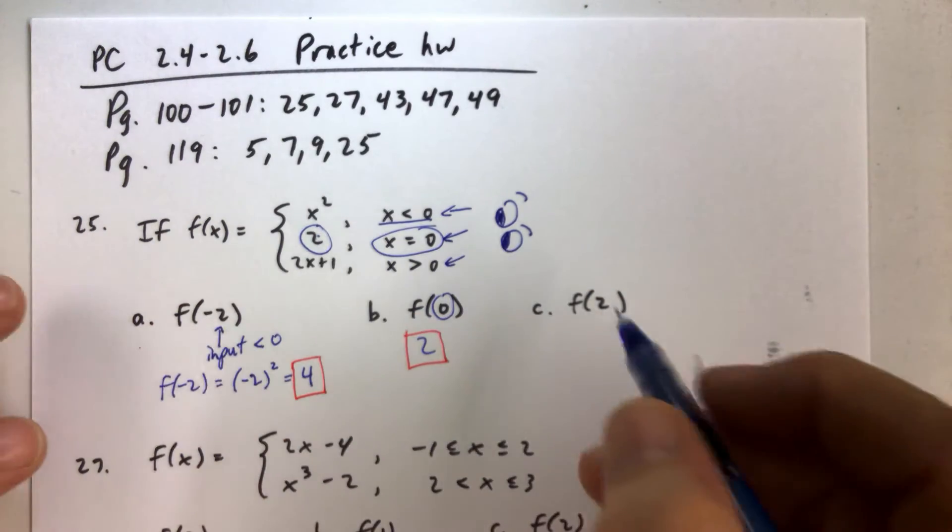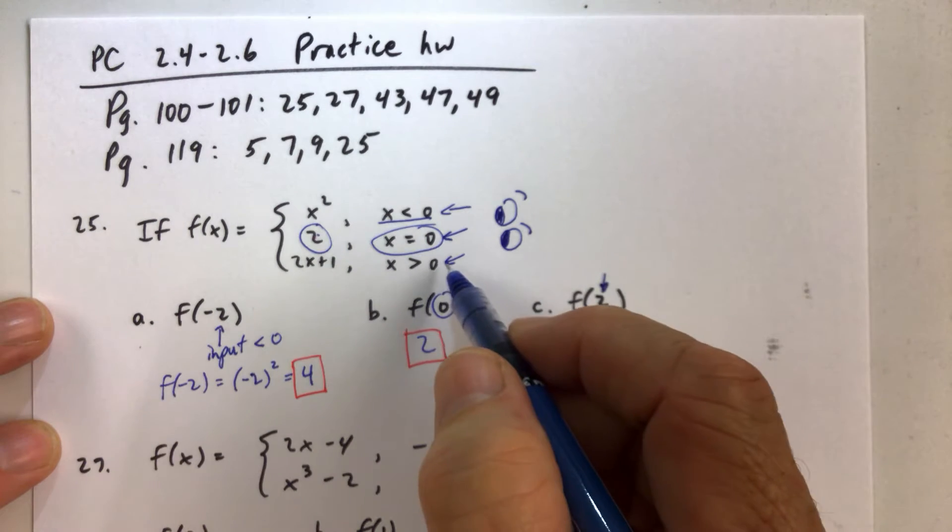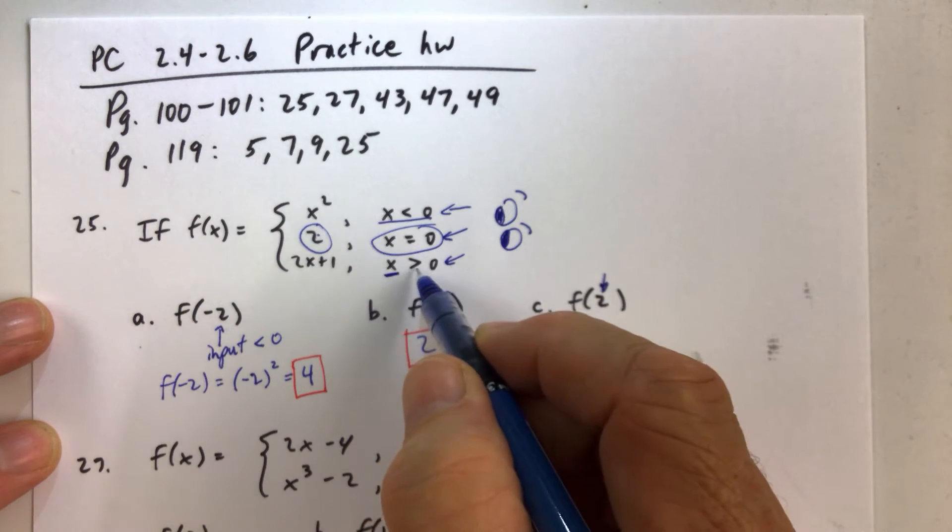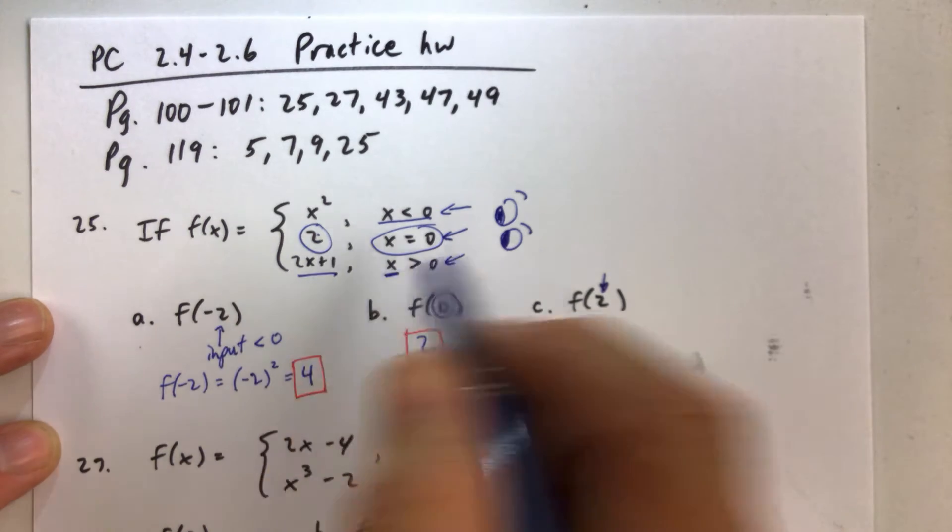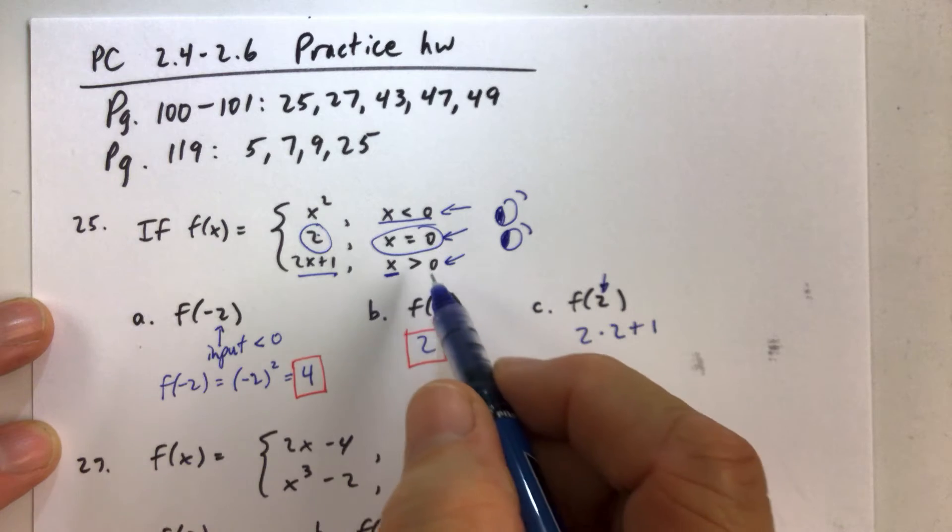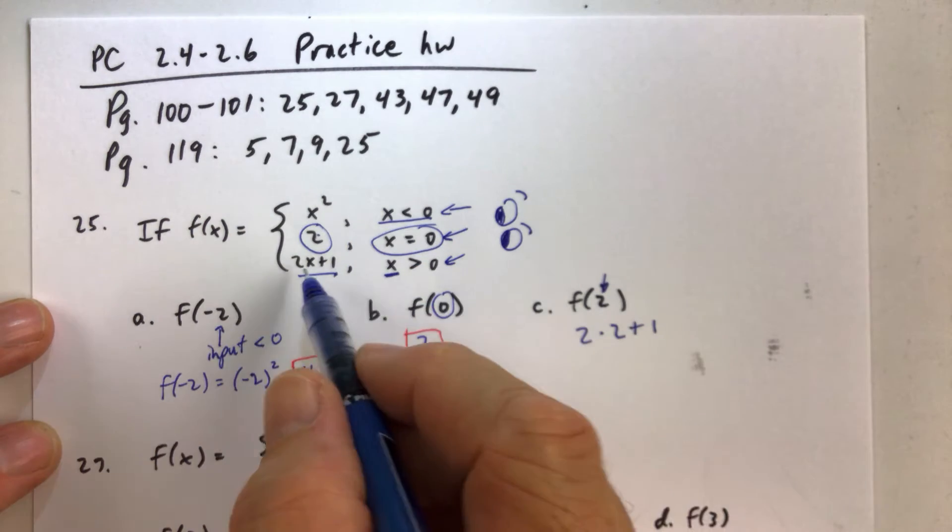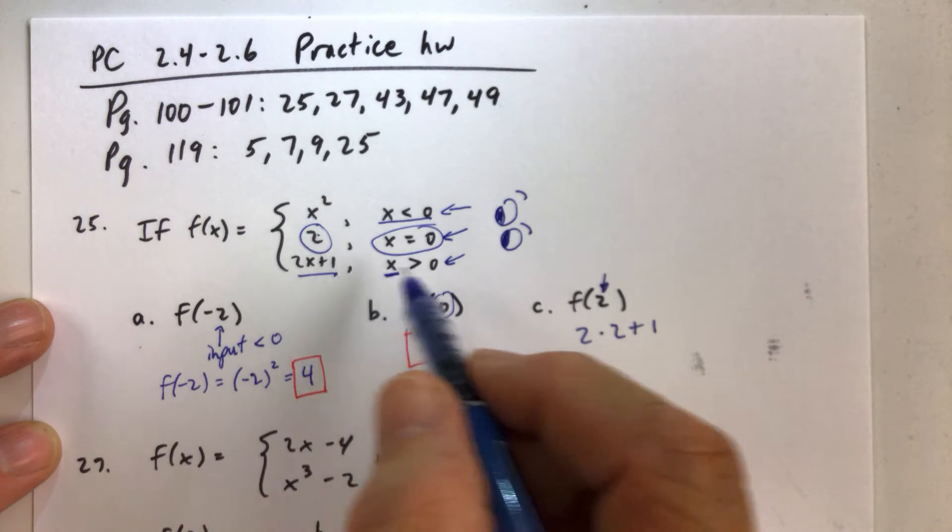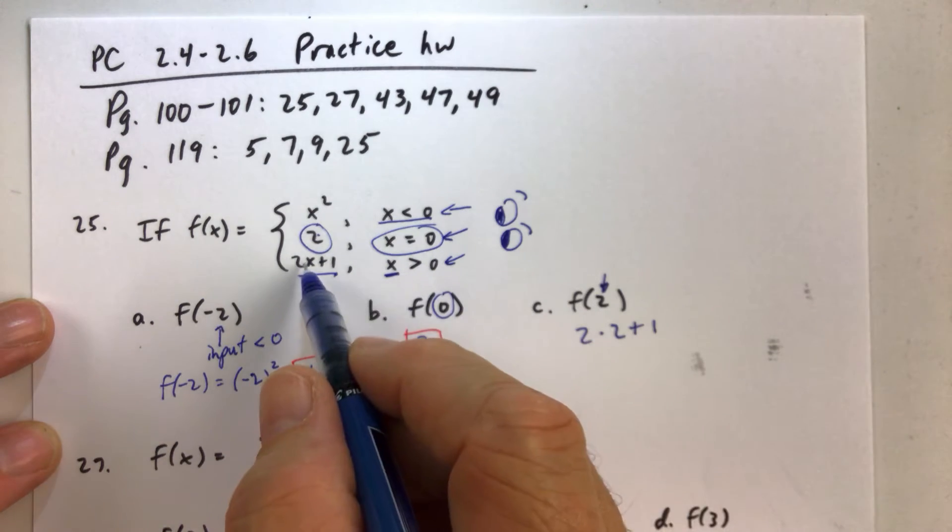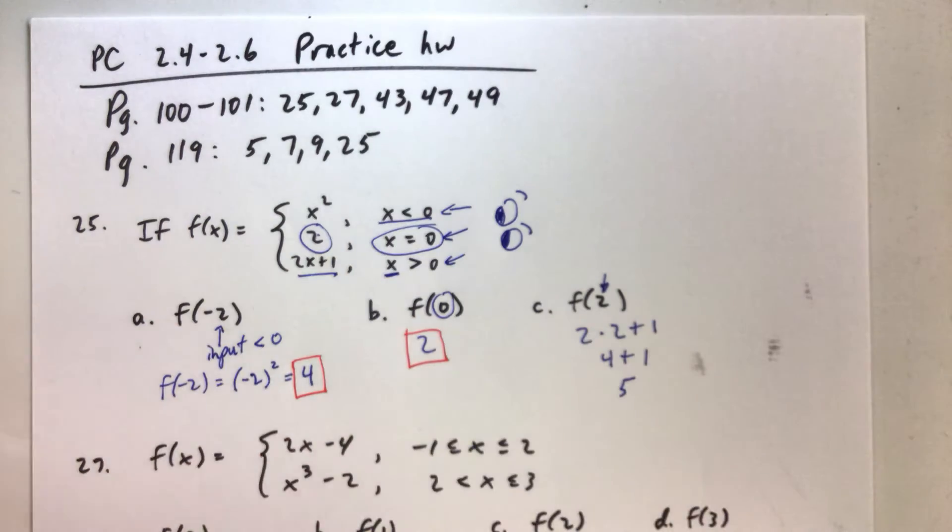And then if x is equal to 2, so if the input is 2, and 2 is greater than 0, that means we have to use this piece. And when you're doing a problem like this, you'll want to just replace x. Show which piece you're plugging your input into. So 2 times x plus 1, if x is greater than 0, 2 times 2 plus 1 is 4 plus 1, which is 5. So that's it.